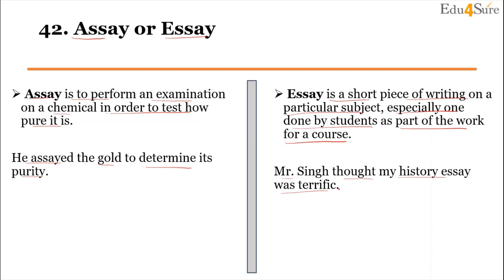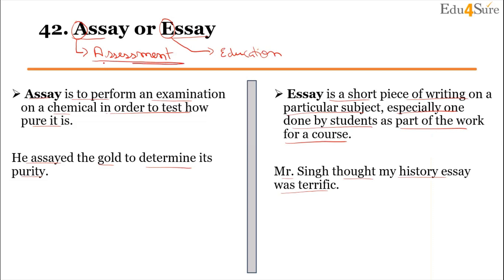To remember the difference between assay and essay: the spelling difference is only A and E. Associate A (in assay) with 'assessments,' and associate E (in essay) with 'education.' So assay relates to assessment and essay relates to education — because we usually do more writing work in school.